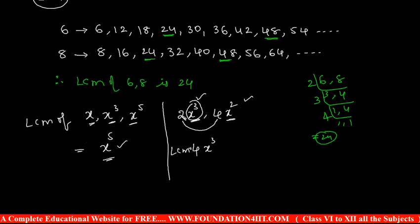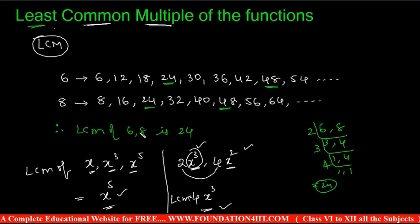So LCM of two X cubed comma four X squared is four X cubed. So these are the brief introduction. Now let me explain some problems based on this least common multiples of the functions. Some more problems I'll show you now.